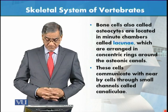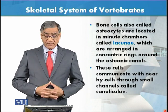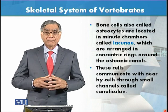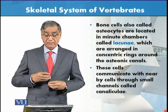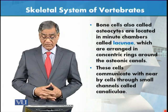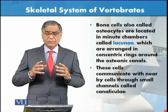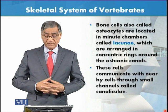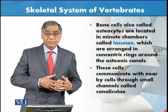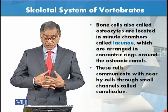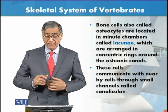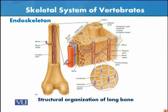Bone marrow is important for the manufacture of blood cells. Bone cells are also called osteocytes. They are located in minute chambers arranged in concentric rings around the osteonic canals. These communicate with nearby cells through small channels.